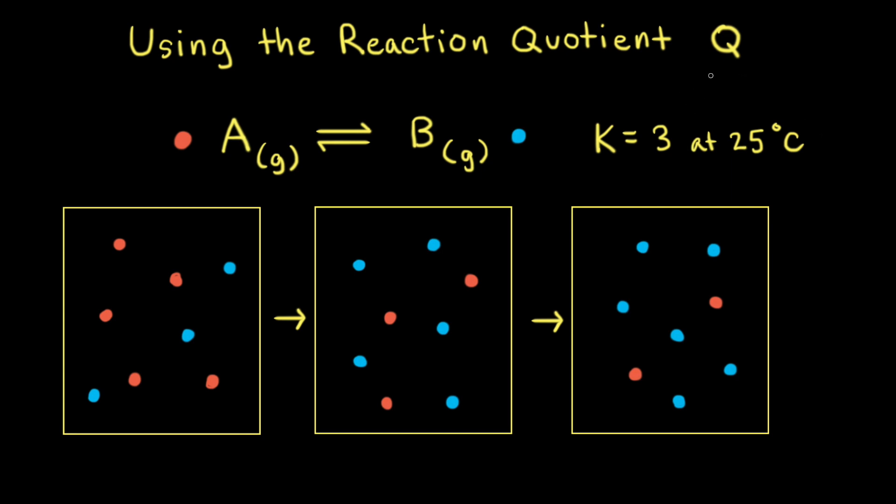The reaction quotient is symbolized by the capital letter Q, and it tells us whether a reaction is at equilibrium or not. If the reaction is not at equilibrium, it also allows us to predict which direction the net reaction will go to reach equilibrium.